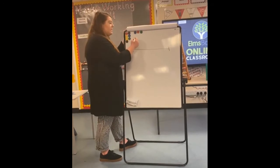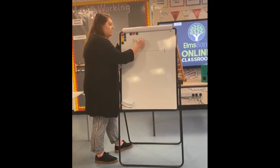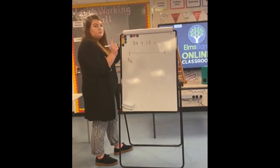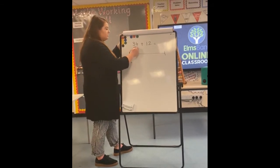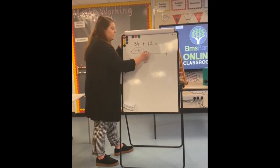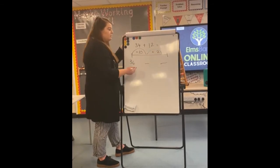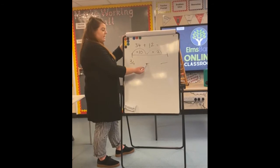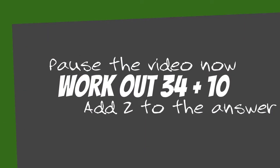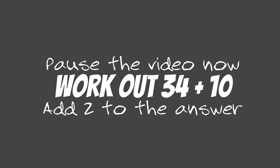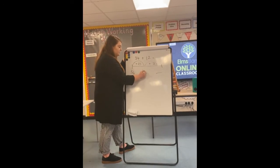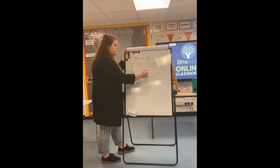We're going to do one together: 34 add 12 equals. We start with 34. Our tens jump is add 10, because we've got one ten in 12, and then we do a jump of adding two. So 34 add 10 is 44, and then 44 add two is 46.